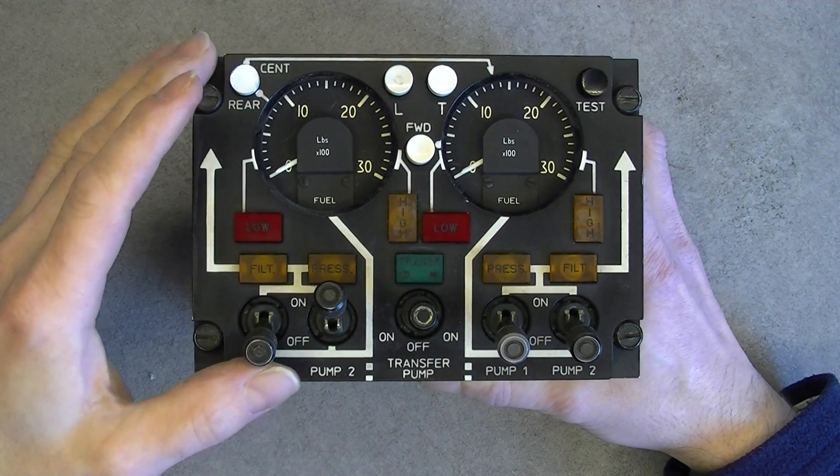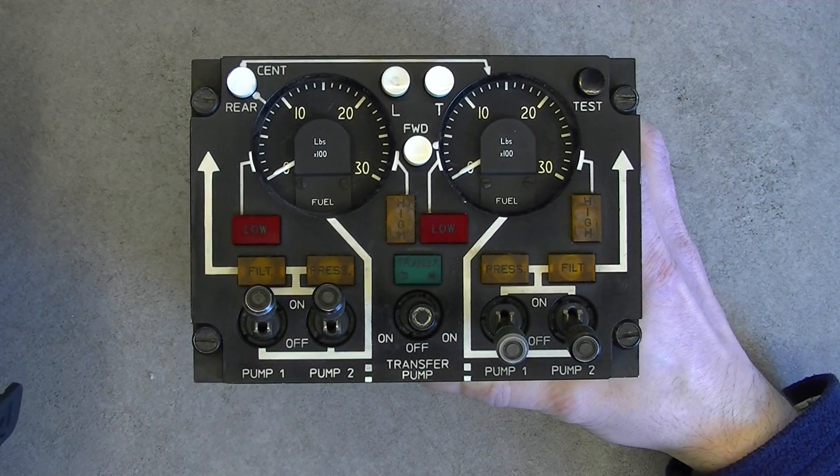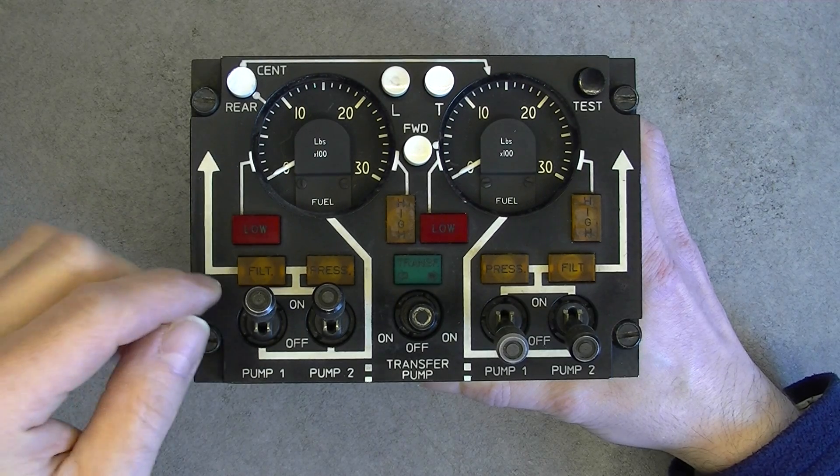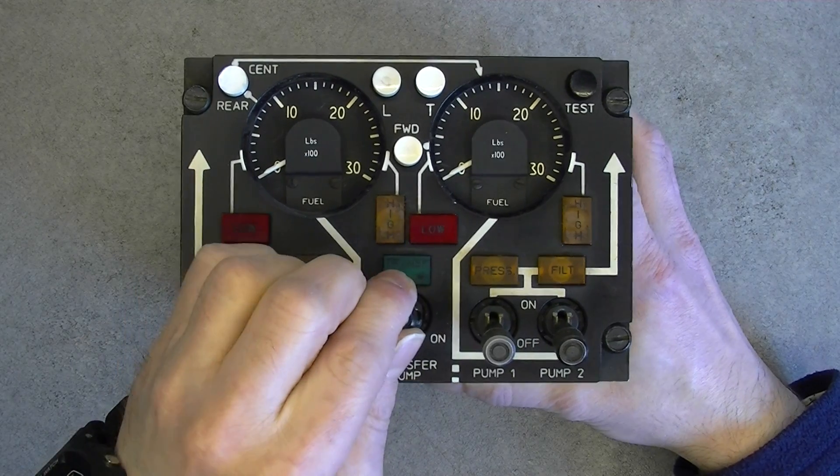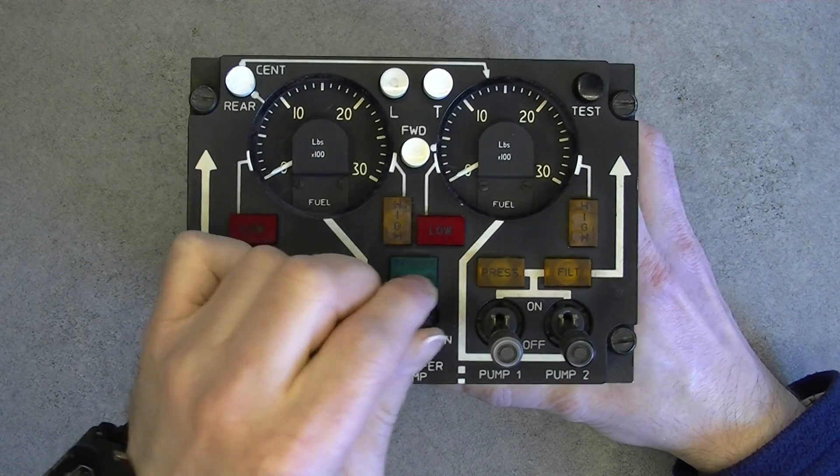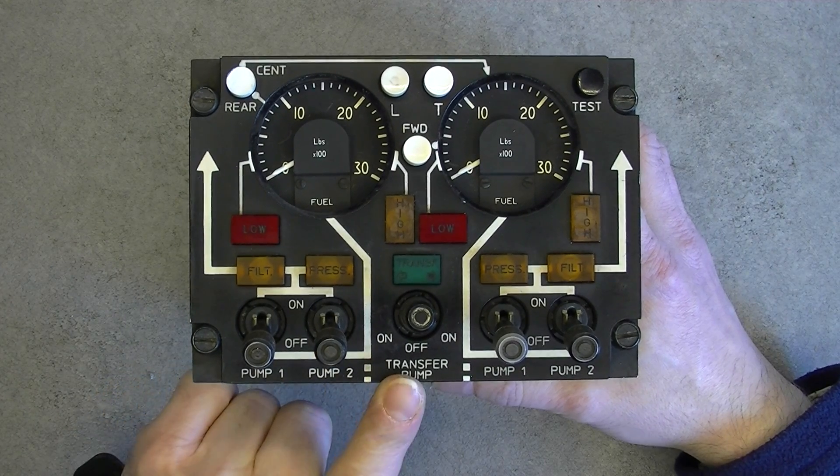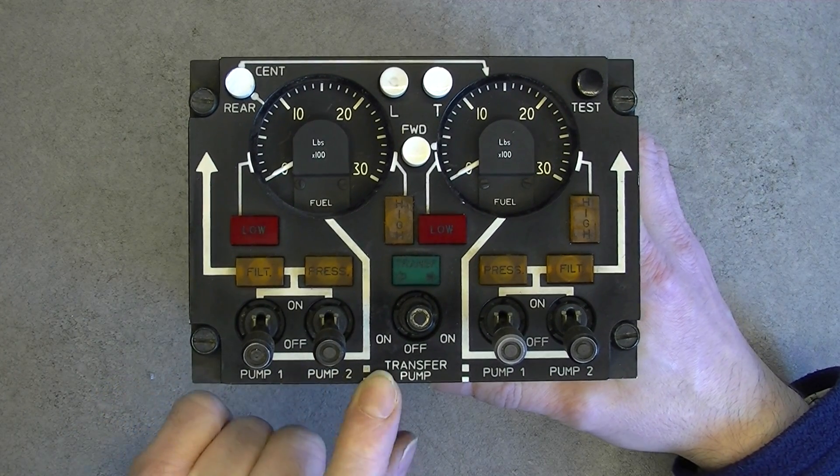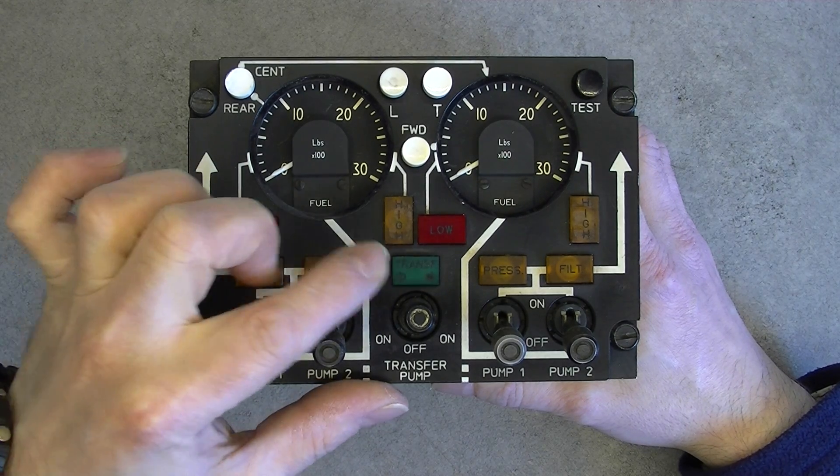You can enable them just like this, but to reset them to off position you have to pull them. Same here, you have to pull to move this button on the side. We have two sets of two pumps, we have a transfer pump with a green transfer light, either left or right.